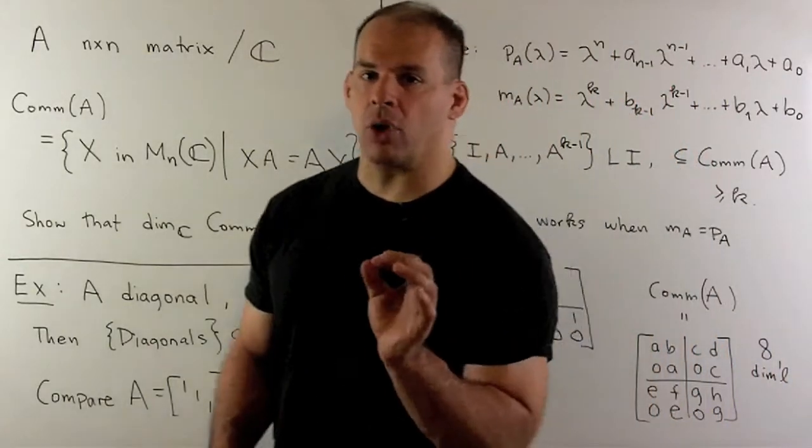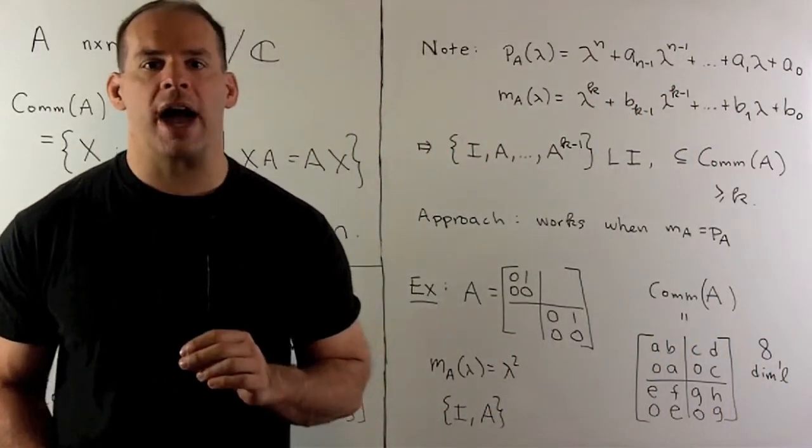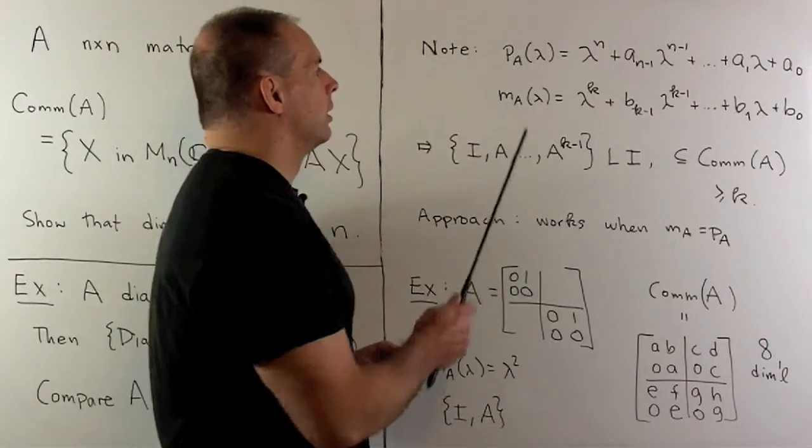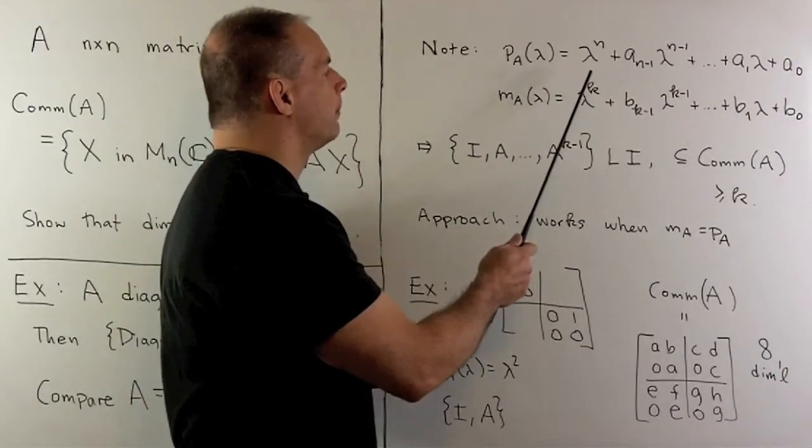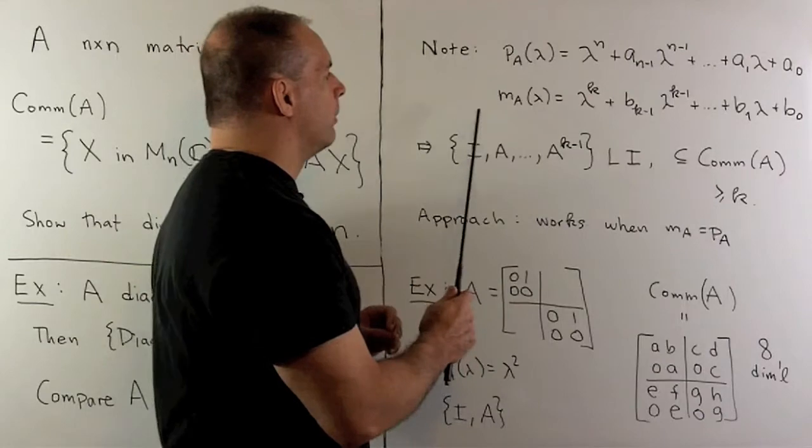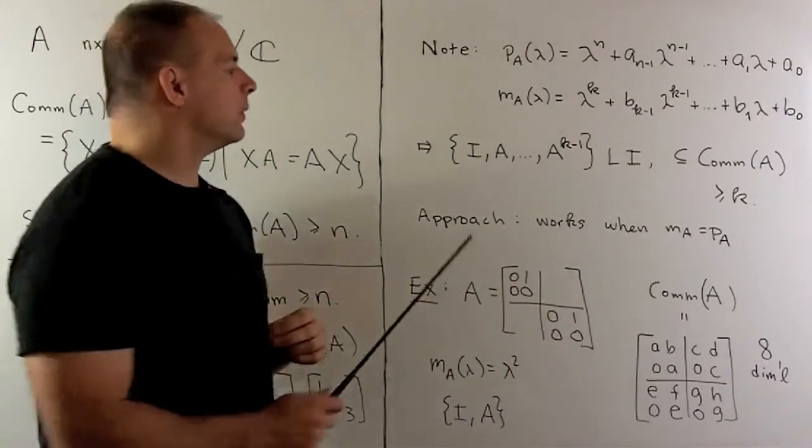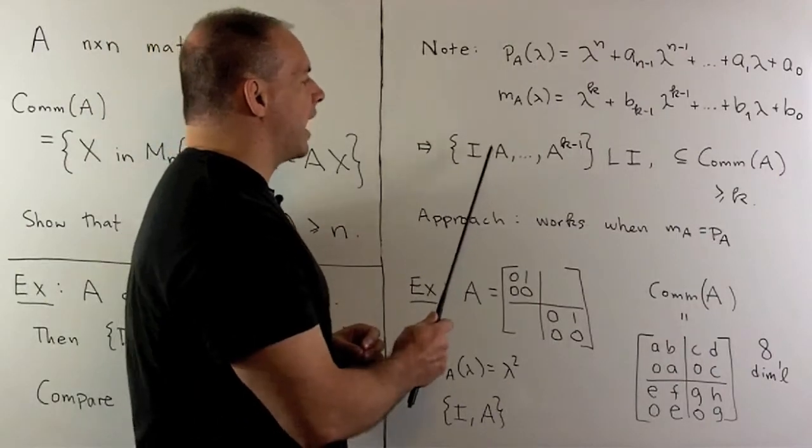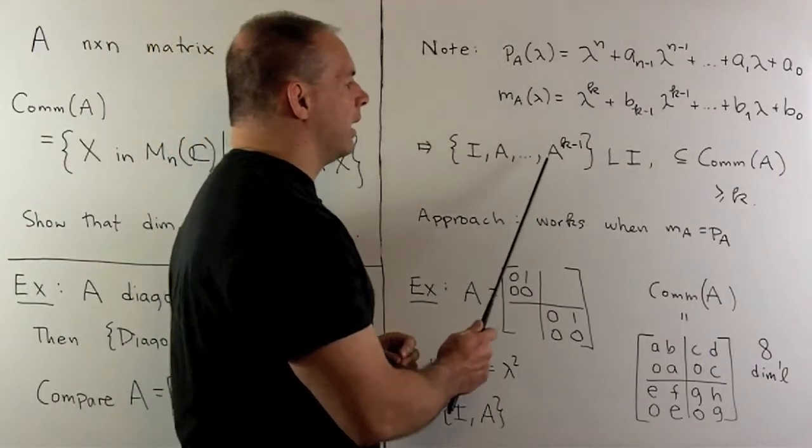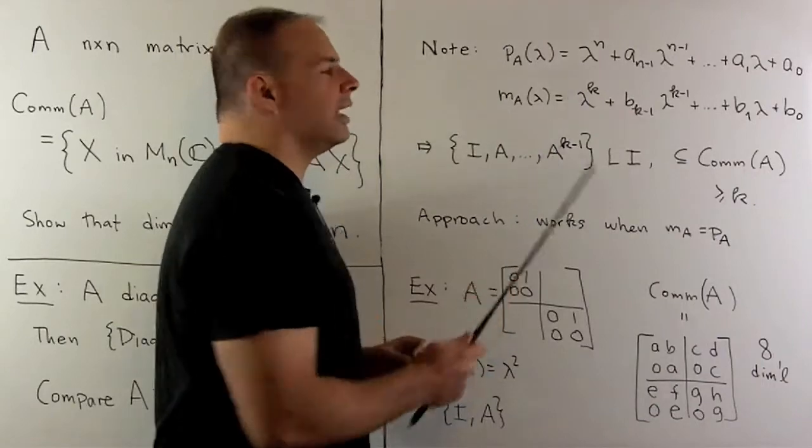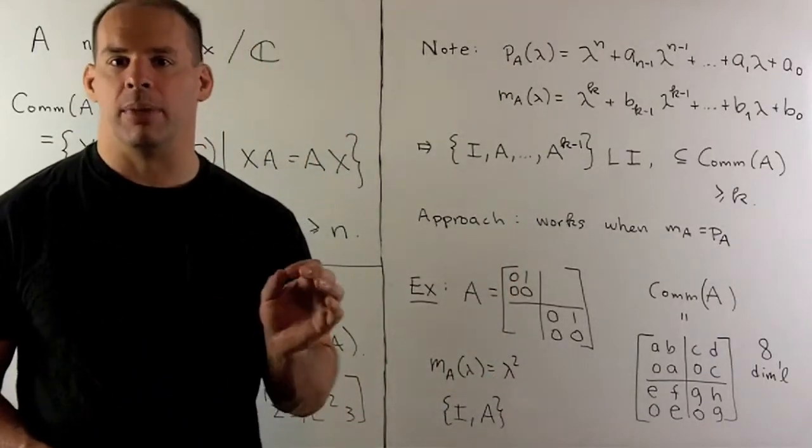Now, in general, one approach we could try: I'll take the characteristic polynomial of A, then I could form the minimal polynomial of A. And that's going to give me a subset: identity matrix, A, A squared, all the way up through A to the K minus 1, where K is the degree of the minimal polynomial.